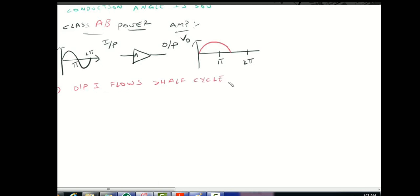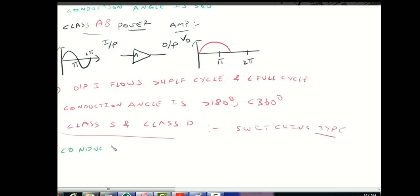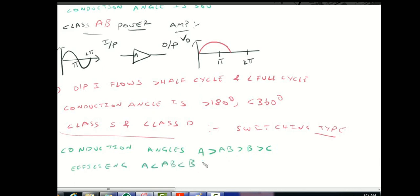Class D and Class S are switching type power amplifiers. Comparing conduction angles: Class A has the greatest conduction angle, followed by Class AB, then Class B, and Class C has the least. For efficiency, the order is reversed: Class A is least efficient, and efficiency increases through AB, B, and C.